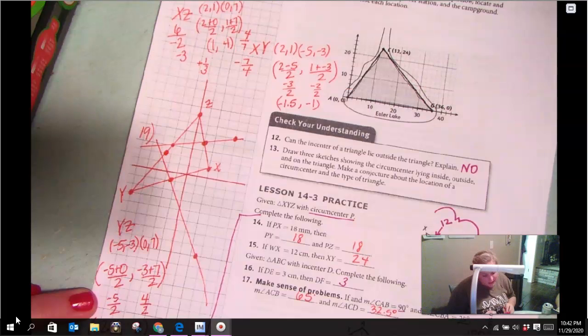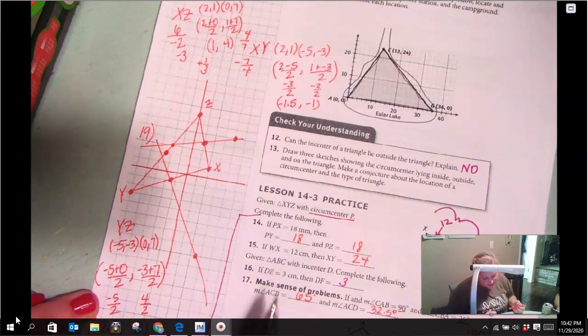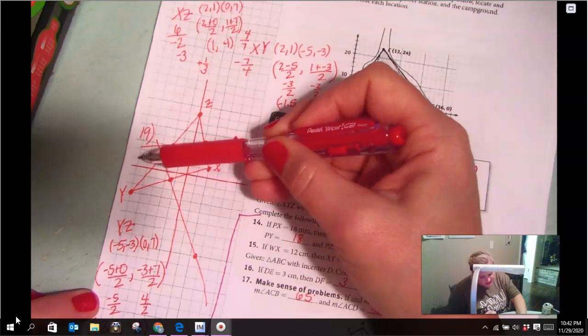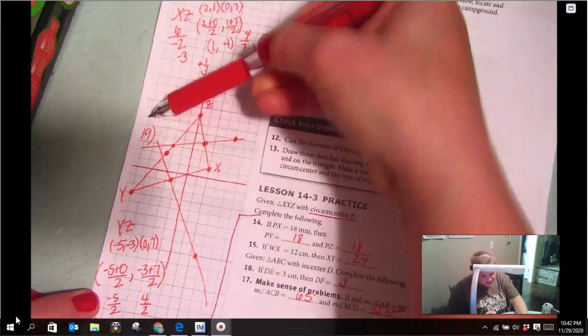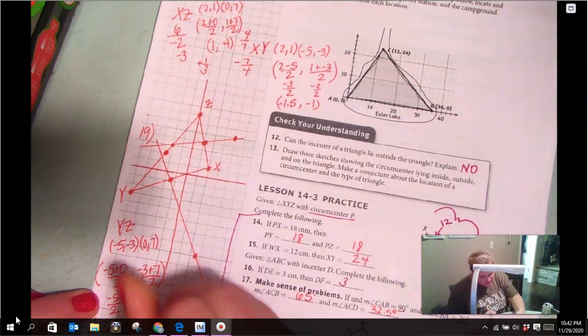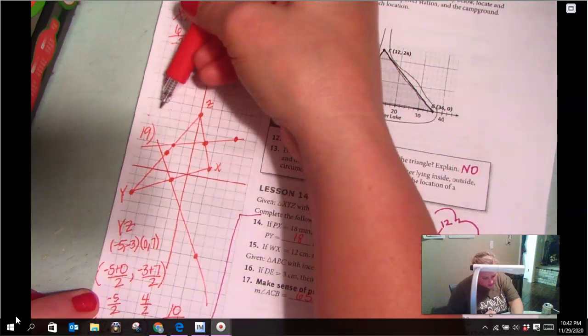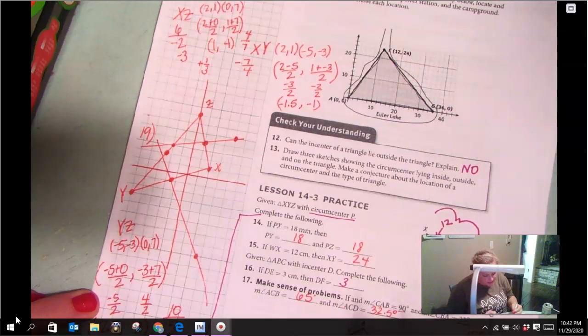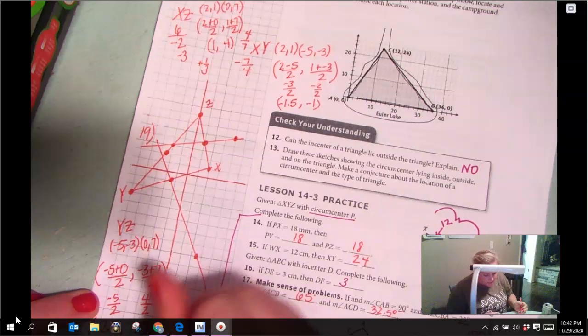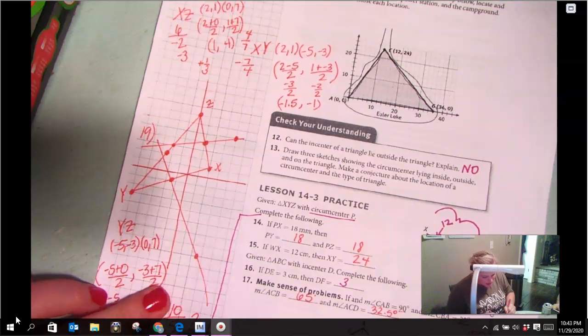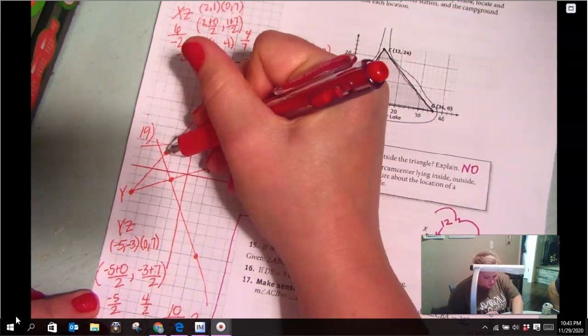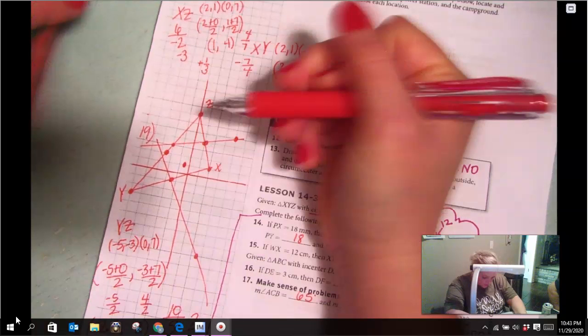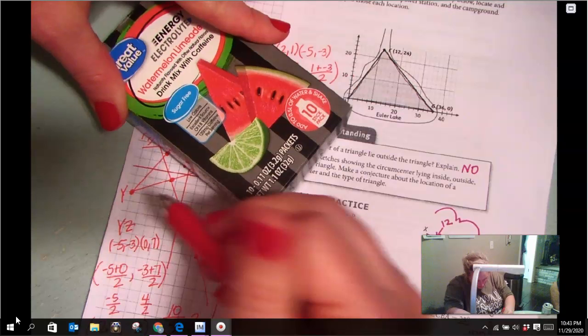And then we need the perpendicular slope to YZ. So I'm going to count up. Rise is 10, run is 5. Both positive up and right, so that's just going to give me 2. So my perpendicular slope is going to be negative 1 half. So from this midpoint, I'm going down 1 over 2, and using my straight edge. And bingo.